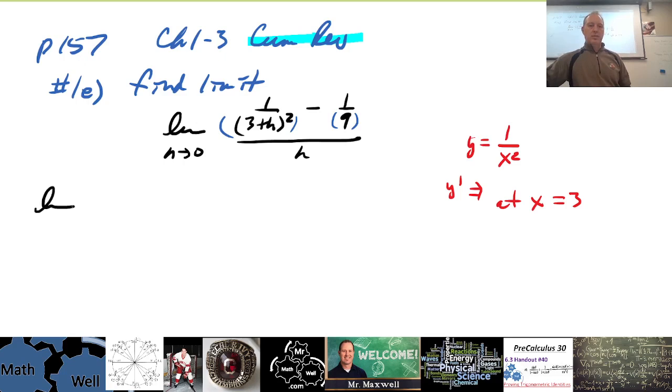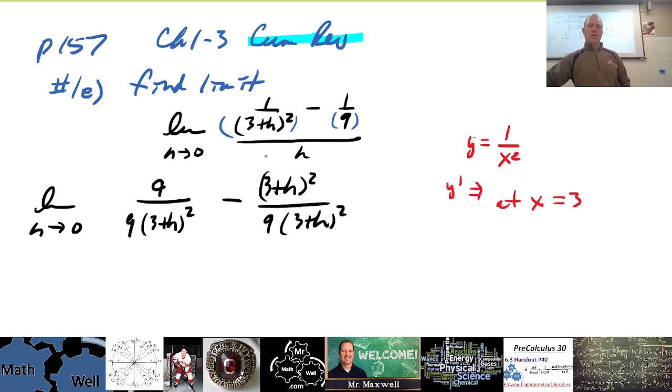So really, we could write this like this, and this is a tricky one, it's a little bit more work, but we could go 9 over 9 times 3 plus h all squared minus, and we're getting a common denominator over here, we've got to multiply top and bottom by 3 plus h all squared over 9 times 3 plus h all squared. So you see, we get a common denominator there, all over h.